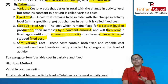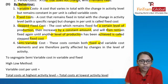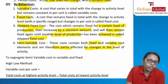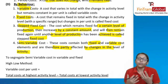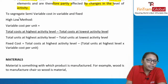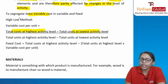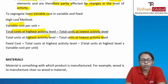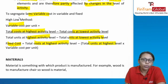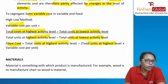Semi-variable cost has two components: a fixed component and a variable component. It is partly affected by changes in activity level because of the variable component. To separate these components, we use the high-low method: variable cost per unit = (total cost at highest level − total cost at lowest level) ÷ (total units at highest level − total units at lowest level). Once you have variable cost per unit, fixed cost = total cost at highest level − (variable cost per unit × units at highest level).